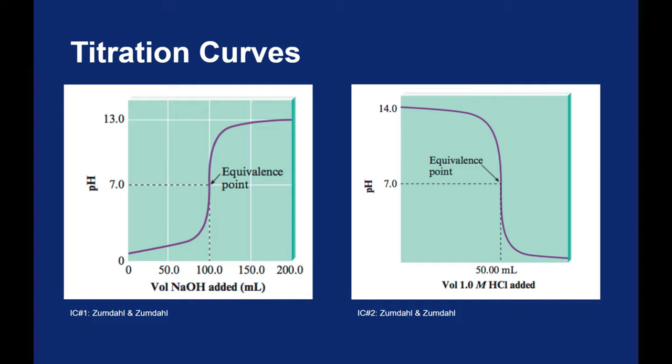If you have an excess of an acid, you will have a very low pH. If you have an excess of base, you will have a very high pH. And that transition happens very quickly through the equivalence point. So around the equivalence point you have a very sharp and sudden change in pH.